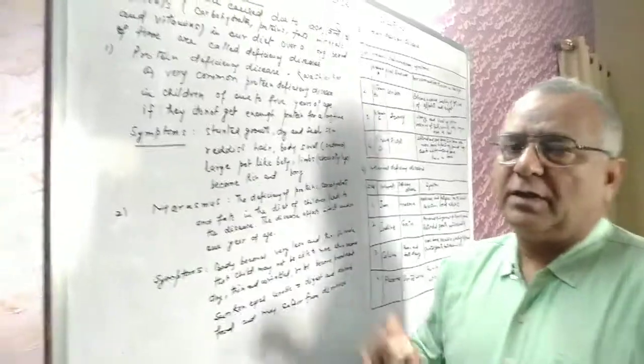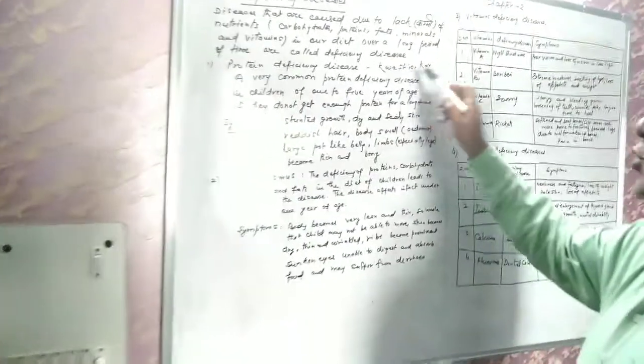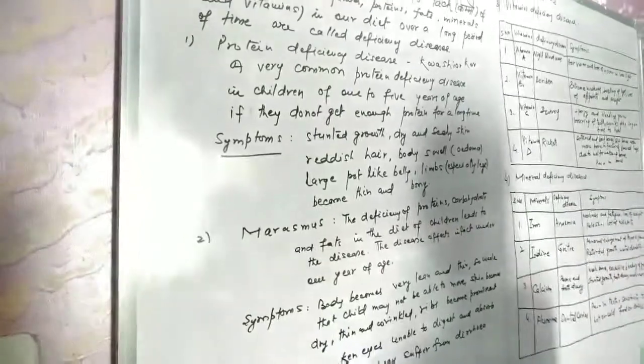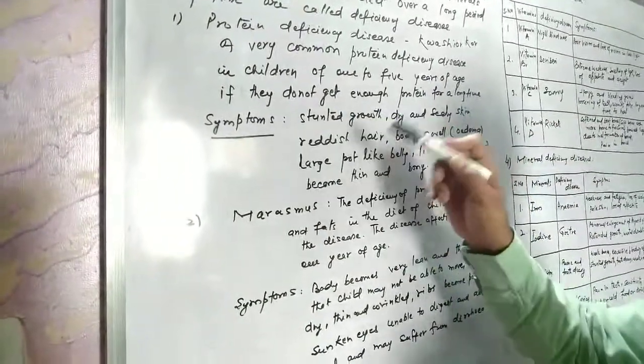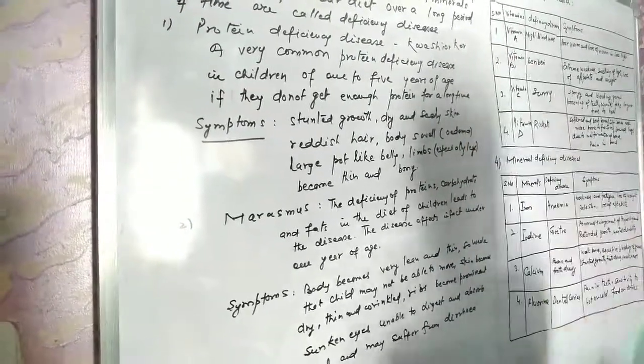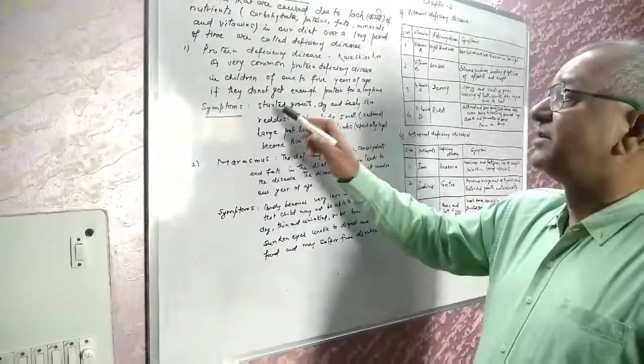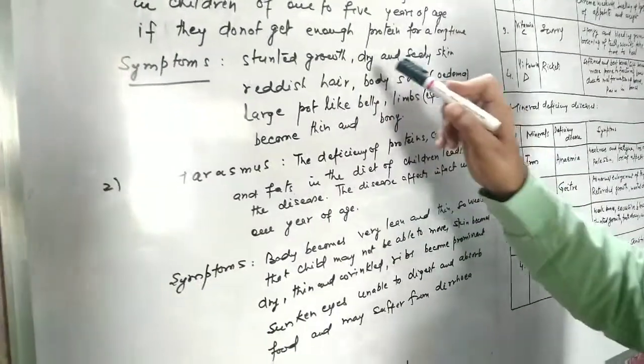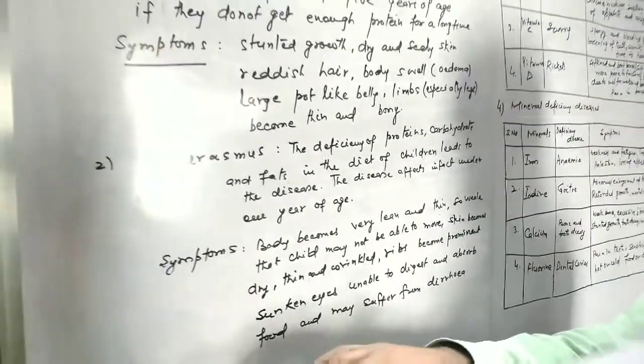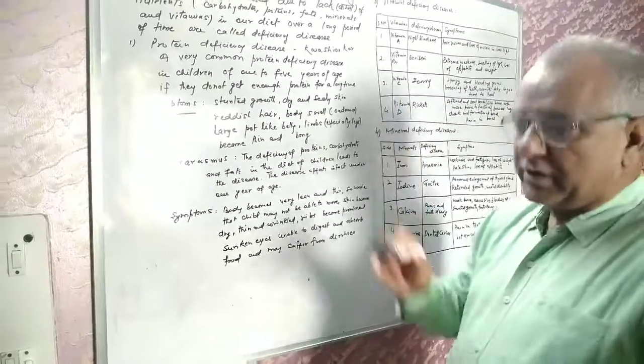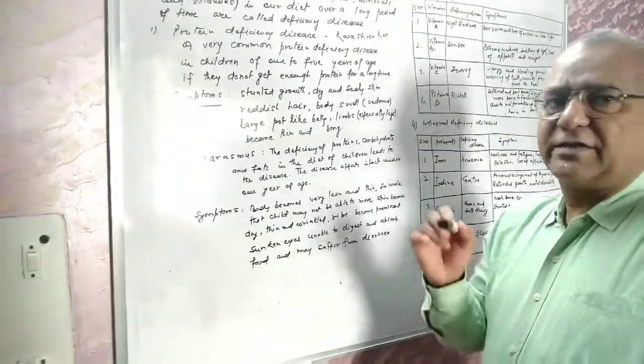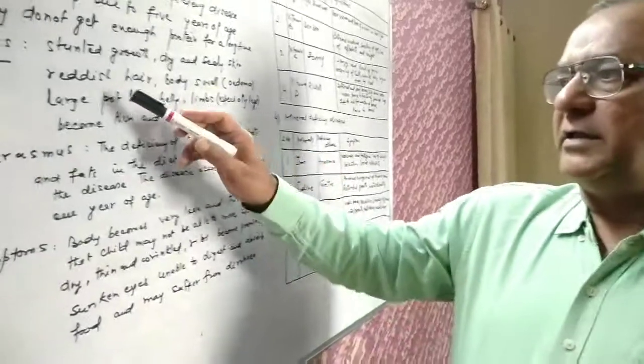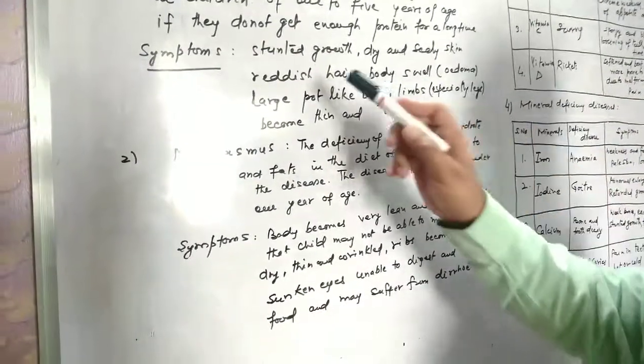First is protein deficiency disease known as kwashiorkor. A very common protein deficiency disease in children of one to five years of age. If they do not get enough proteins for a long time they may suffer from kwashiorkor. Symptoms are: stunted growth, dry and scaly skin - the shine on skin is gone and it becomes rough. Reddish hair and hair fall.